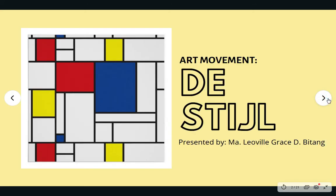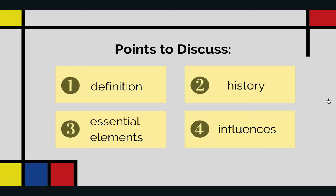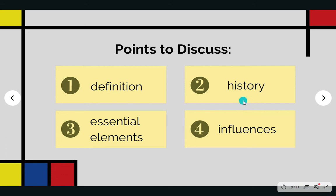As you can see in the slide, the topic that I'm going to discuss today is De Stijl. The points to be discussed are: number 1, the definition; number 2, the history; number 3, the essential elements; and lastly, the influences. It is significant to learn all of these for us to understand well how this style became an art movement and the importance of it through the years.